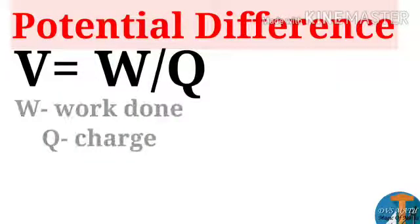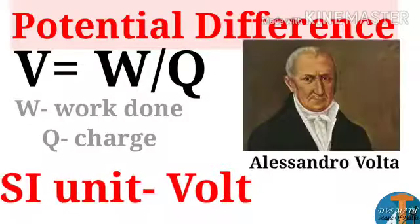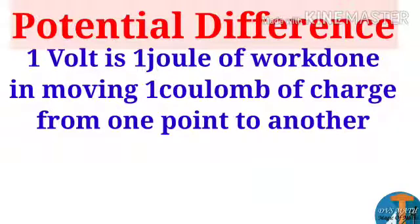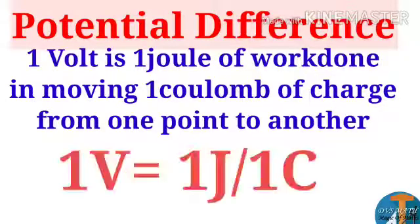The SI unit of electric potential is volt, named after the physicist Alessandro Volta. Now if we define one volt: one volt can be defined as one joule of work is done in moving one coulomb of charge from one point to another. That means 1 volt = 1 joule / 1 coulomb.